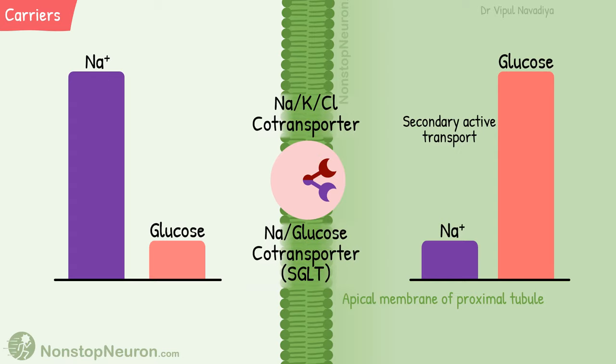Another example of a co-transporter is the sodium-potassium-chloride co-transporter at the apical membrane of the thick ascending limb of the loop of Henle.